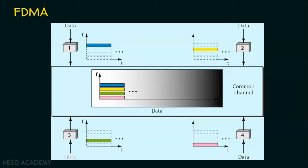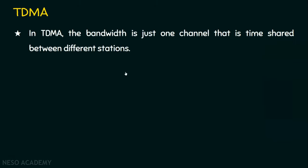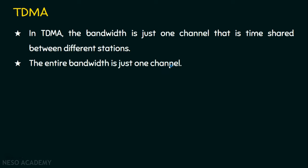Coming to the next technique — time division multiple access. In TDMA, the bandwidth is just one channel, meaning the entire bandwidth at any particular time is given to one station only. The bandwidth is time-shared between different stations. If we have 10 stations, all 10 stations will not send their data at the same time; rather, each station is allocated a time slot, and during that time, that station will transmit. The full capacity of the channel is given to one station at a time, then given to other stations in a time-shared manner.